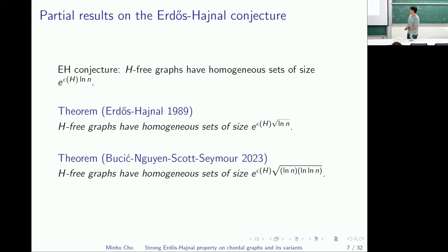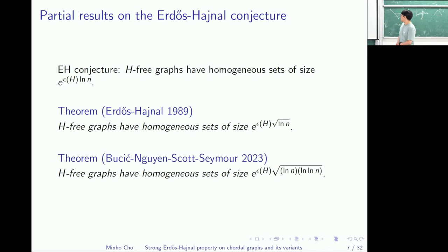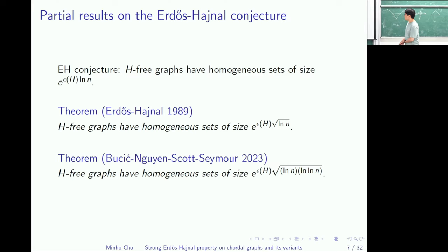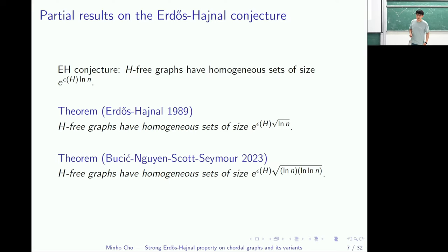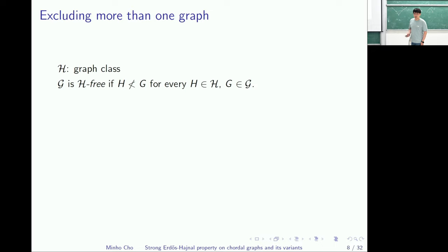So far these are known results on graph classes forbidding a single graph. The next natural question is: what happens if you give more and more structure on your graph class? For example, what happens if you exclude two graphs, three graphs, or even some family of graphs?